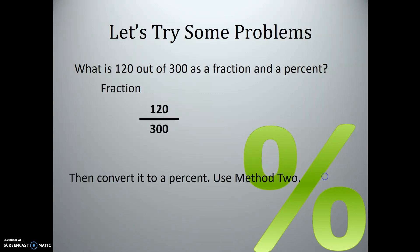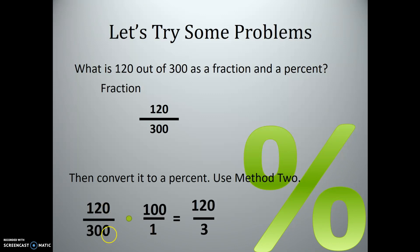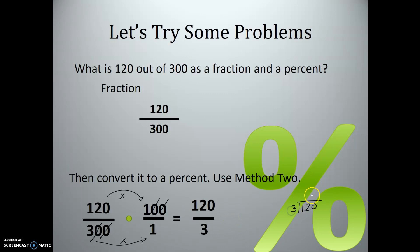Now let's use method two on 120 over 300: multiply by 100 over 1. Cross-canceling by dividing numerator and denominator both by 100 — crossing off two zeros — gives us 120 times 1 over 3 times 1, which is 120 over 3. Dividing: 3 goes into 12 four times, bring down the zero — we get 40%.